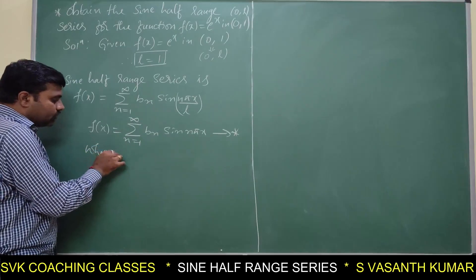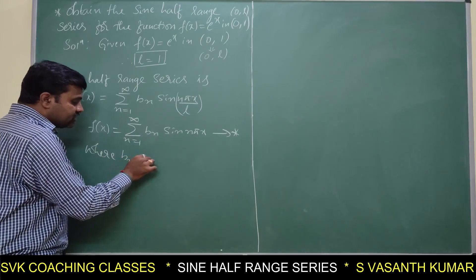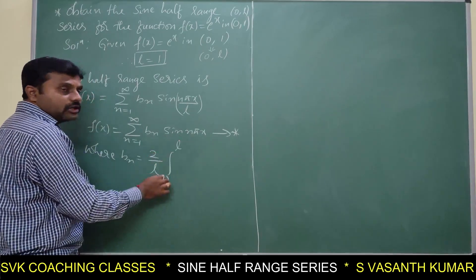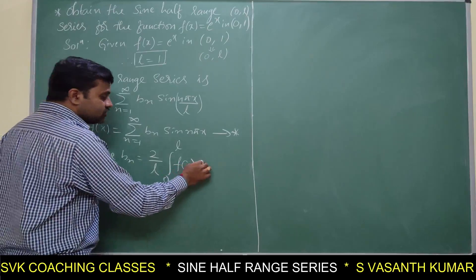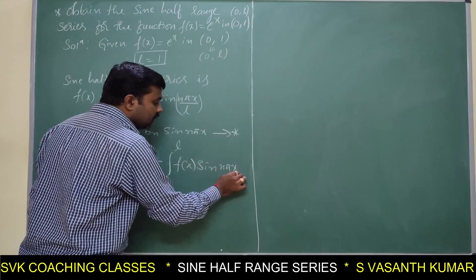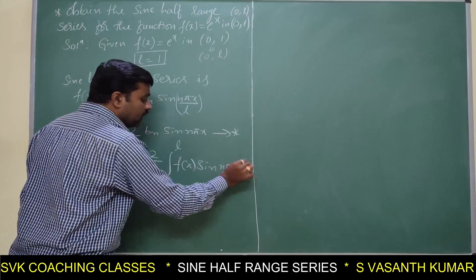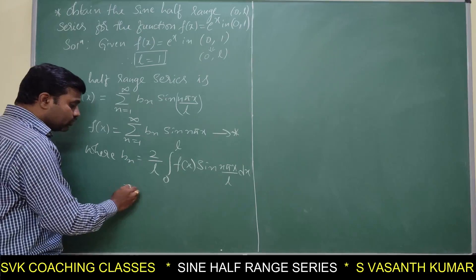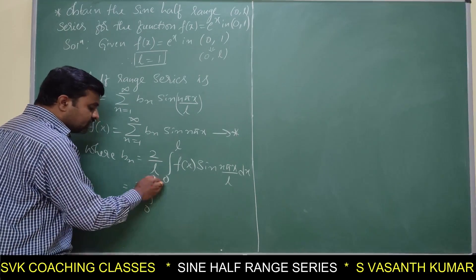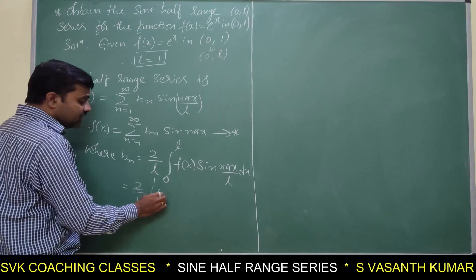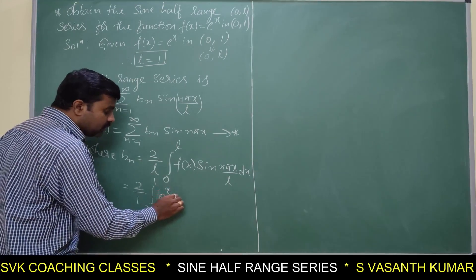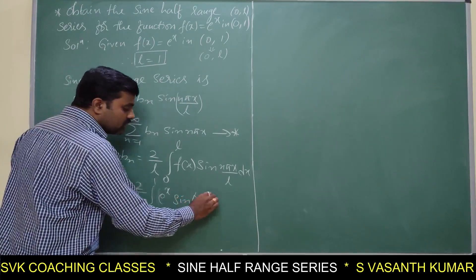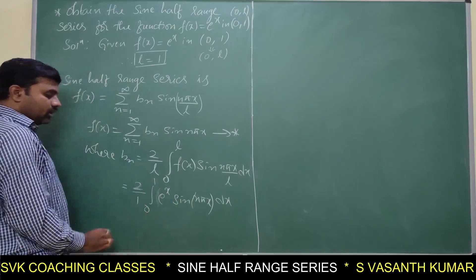Where bn is defined in general as (2/l)∫₀^l f(x)·sin(nπx/l) dx. Substituting l = 1 and f(x) = e^x, bn = 2∫₀^1 e^x·sin(nπx) dx.